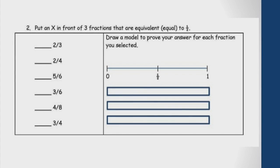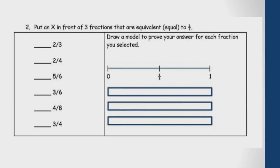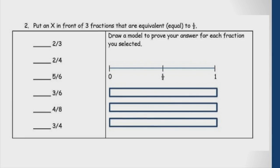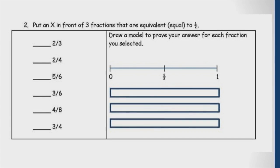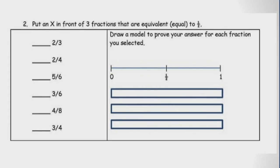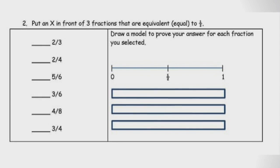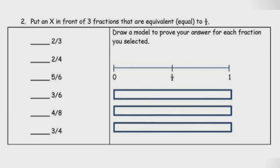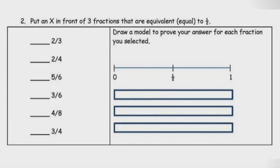They were supposed to pick out three fractions that were equivalent to one-half and draw a model to prove their answer. We used a number line as a reference point, but I wonder if that really assessed what we wanted it to. Because part of standard 3A was to understand two equivalent fractions on a number line, and we only used it as a reference. Do you think we could adjust that question for next year? Yeah, I think we need to. It did not test what we expected it to test — I don't think we got the information we wanted from that.